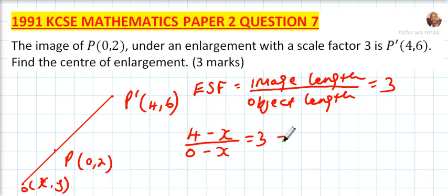So you can cross multiply: 4 minus x equals minus 3x. Take x to the other side, you have 2x equals minus 4. Dividing both sides by 2, x equals minus 2.